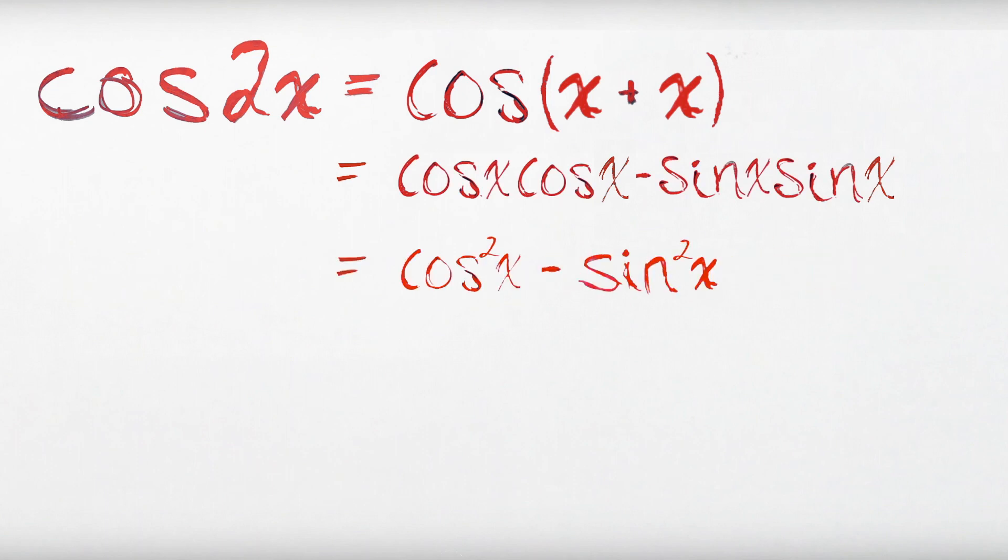Well, cos x times cos x is cos squared x, and sin x times sin x is sin squared x. It's so simple you can't believe you didn't think of it yourself.